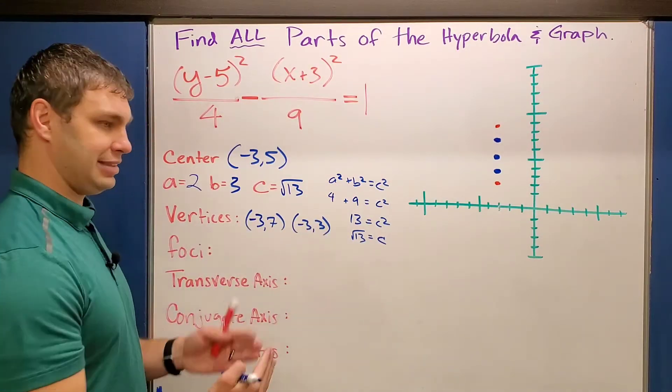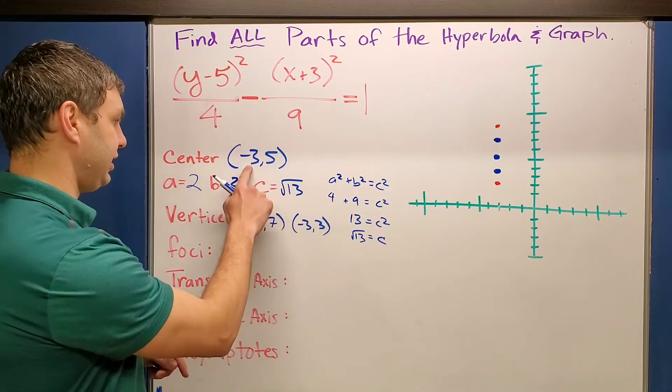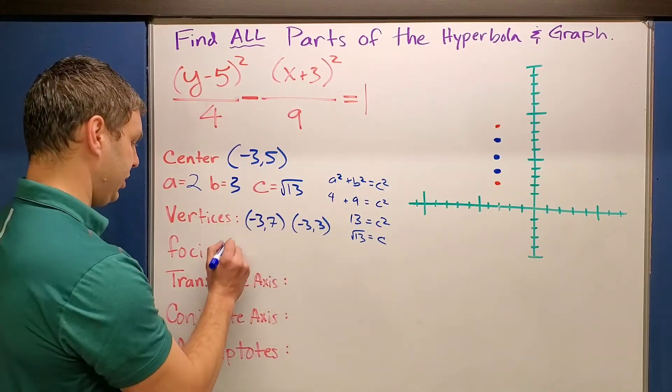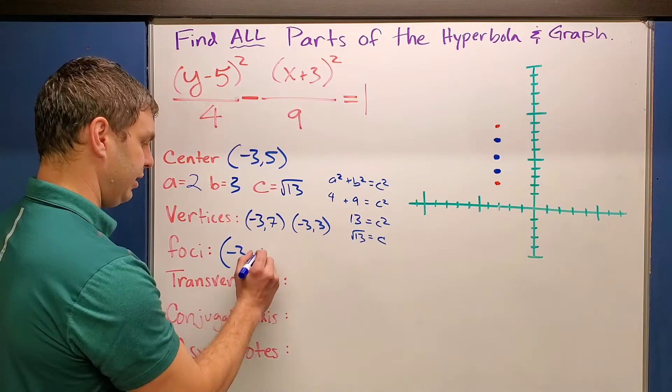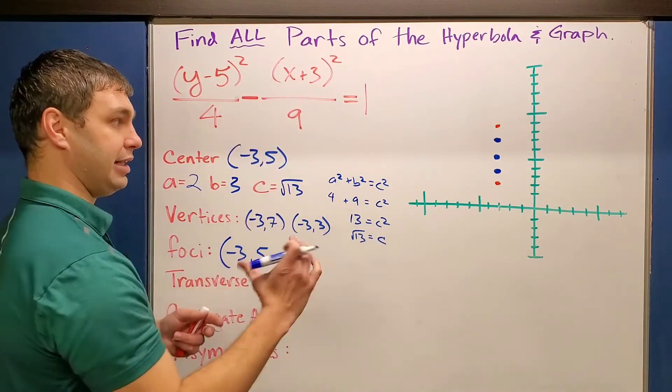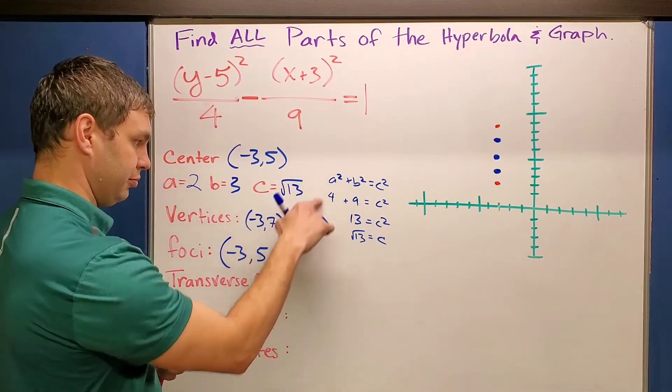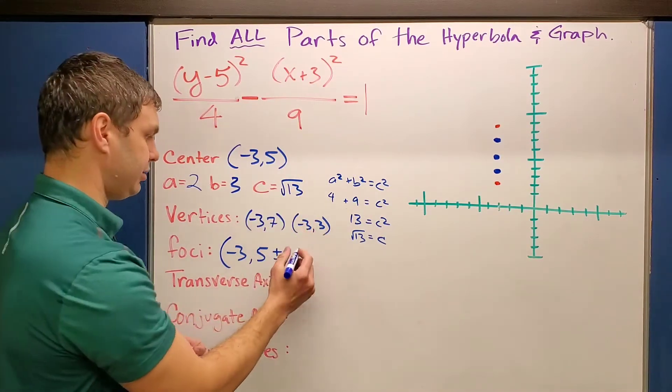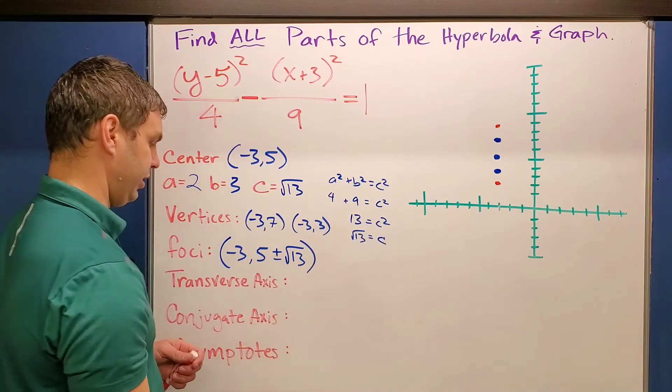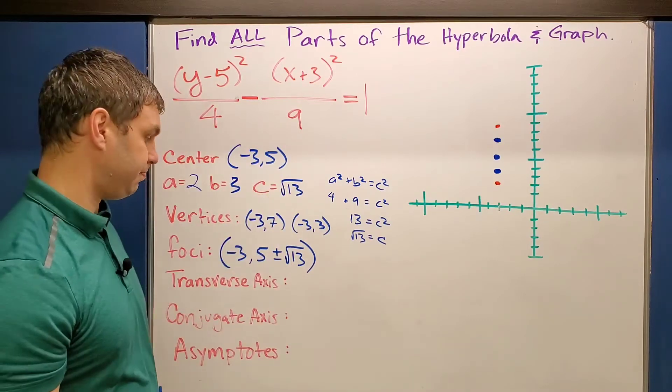And again, the way that we write this is that changed in our y direction. So compared to my center, negative three, five, my foci are going to be negative three, and then instead of just saying five, I actually have to add or subtract to get up to those red dots. So I'm going to say plus or minus, and then the, what I plus or minus there is the square root of 13. So this is like my x, y point of both of those foci.